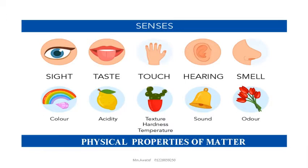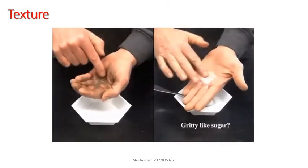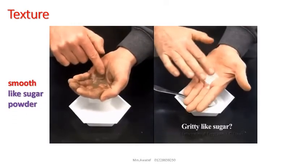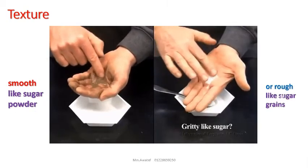Which properties can be detected by our senses? Color, detected by our eyes. Taste, like the sour taste of lemon. Smell, like the odor of flowers or perfumes. Besides, the texture of matter — which means whether the surface is smooth like sugar powder, or rough like grains of sugar or sand. Texture is recognized by our skin.